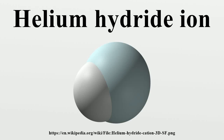The hydrohelium cation, HeH⁺, also known as the helium hydride ion or helium hydride molecular ion, is a positively charged ion formed by the reaction of a proton with a helium atom in the gas phase, first produced in the laboratory in 1925. It is isoelectronic with molecular hydrogen and is the strongest known acid, with a proton affinity of 177.8 kJ per mole.